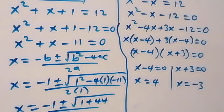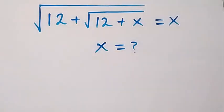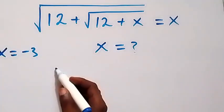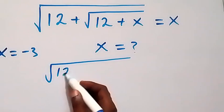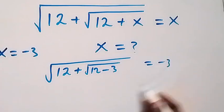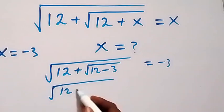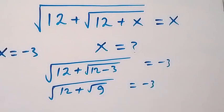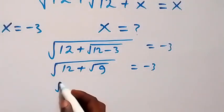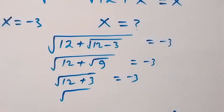Now we check from what is given: square root of 12 plus square root of 12 plus x, equals to x. For x equals to minus 3, substituting: left hand side is square root of 12 plus square root of 12 minus 3, equals square root of 12 plus square root of 9, equals square root of 12 plus 3, equals square root of 15. This is not equal to minus 3, so x equals to minus 3 is not a solution.